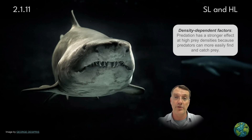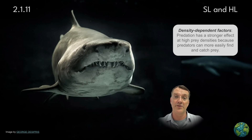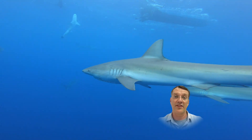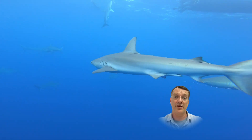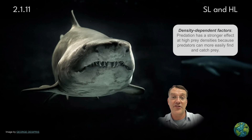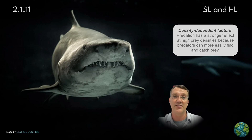As already mentioned, predation pressure often increases with the density of the prey population. The more prey there are for larger predators to eat, the greater the predator population. As the prey population decreases, the predator population will also decrease. That's how the predator-prey relationship regulates population density.